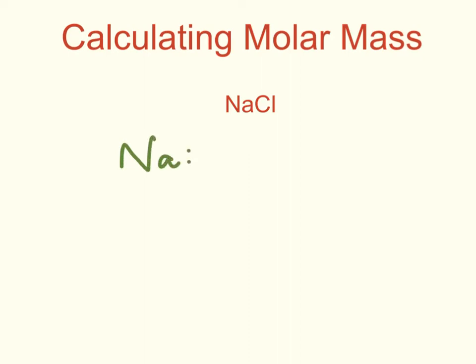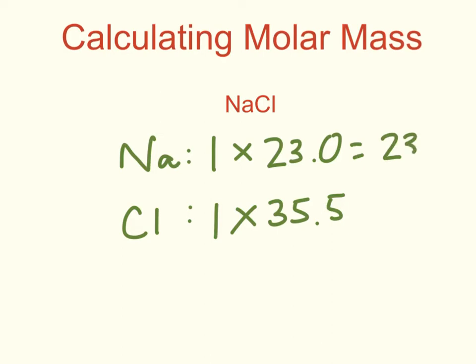For sodium, in this formula, I have one atom. If I look at the periodic table, I see that the atomic mass for sodium is 23 grams. I also see that I have one chlorine in this formula, so I'm going to take one times the atomic mass of chlorine, which is 35.5 grams. So one times 23 is 23. One times 35.5 is 35.5.